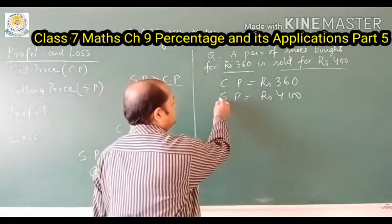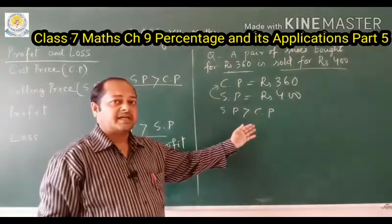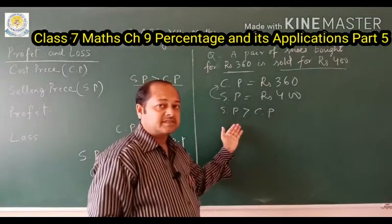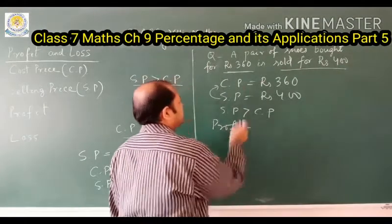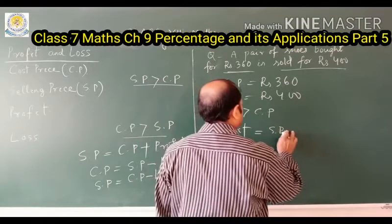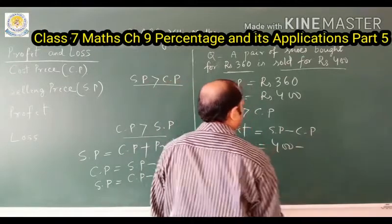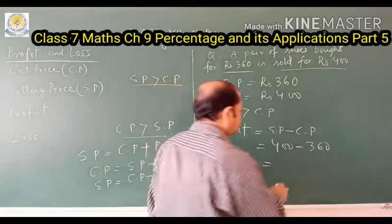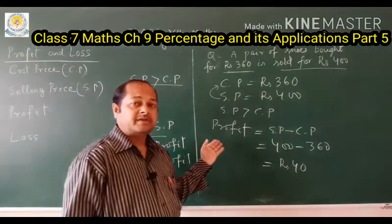Here SP is greater than CP, so this is a case of profit. What is asked? Find the profit. Profit = Selling Price − Cost Price = 400 − 360 = 40 rupees. So the profit is 40 rupees.